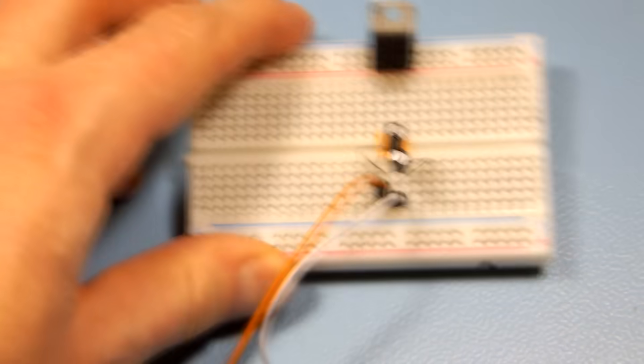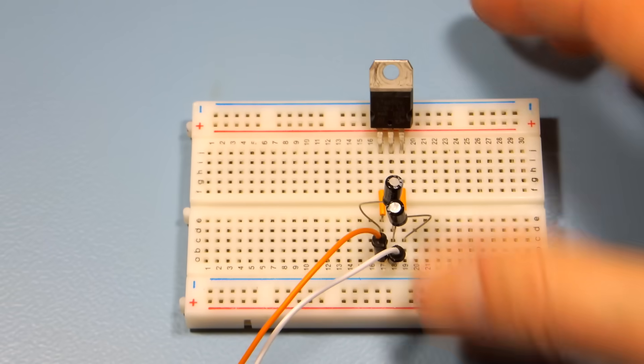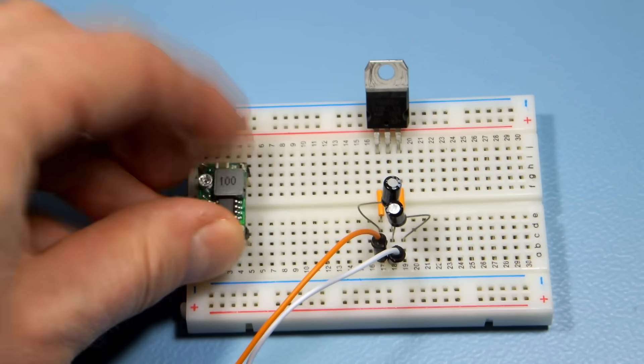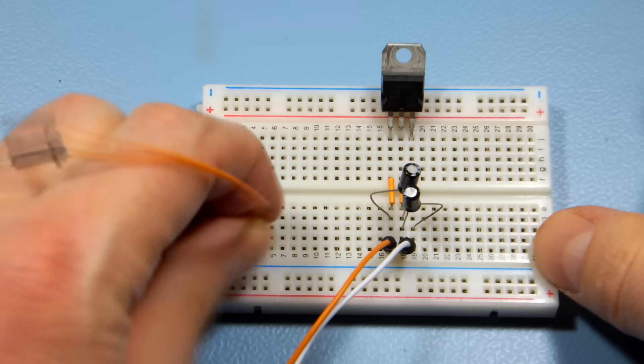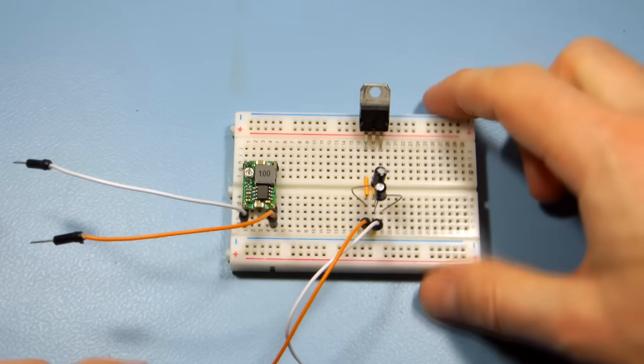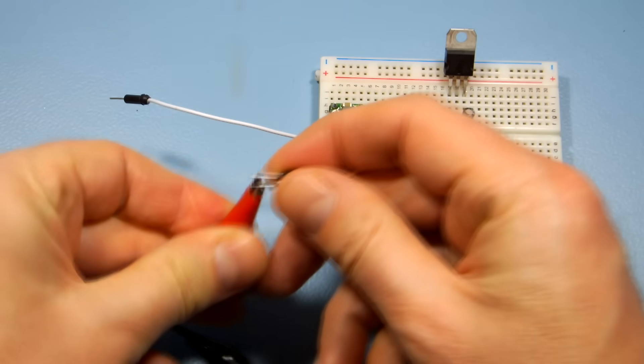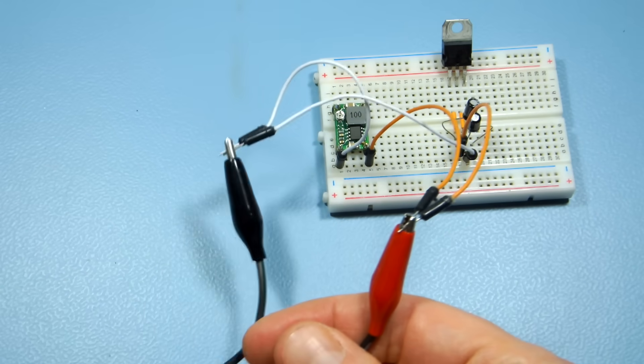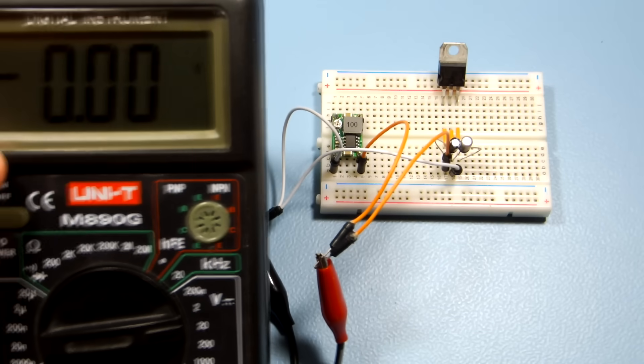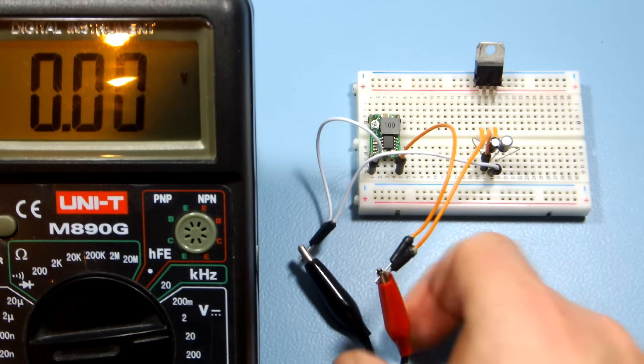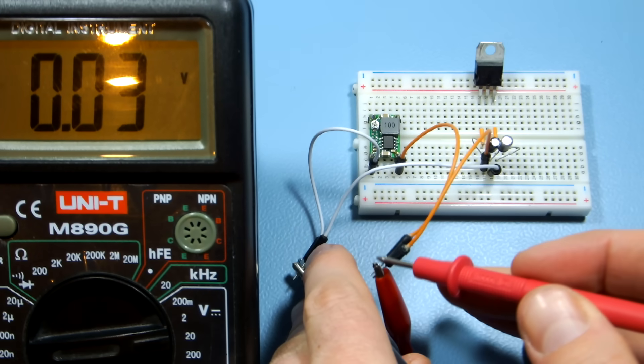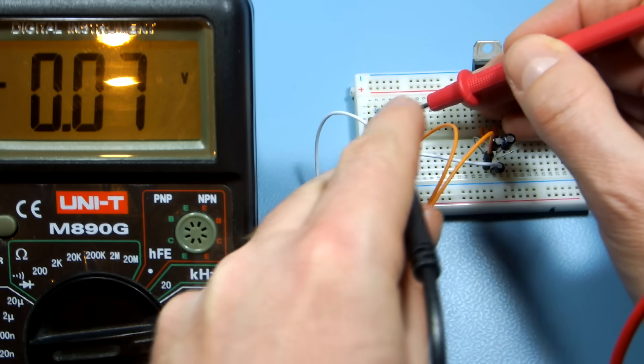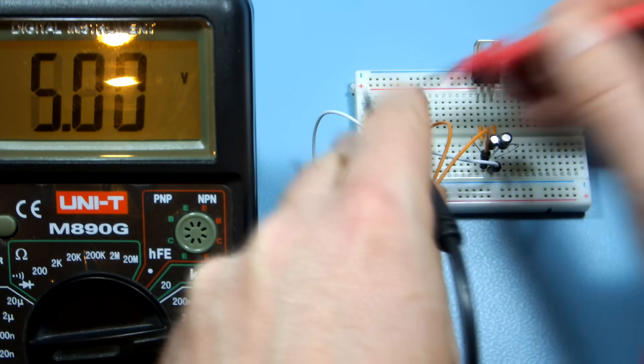Let's compare in practice the already mentioned LM7805 linear voltage regulator with this really small buck converter. Both are given 12V on the input and they provide 5V on the output.